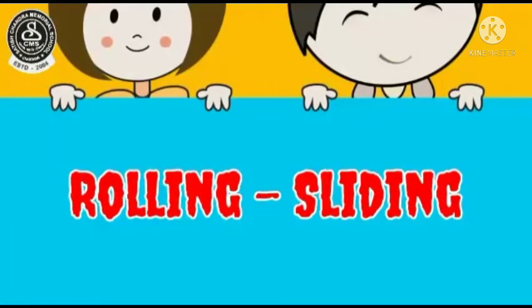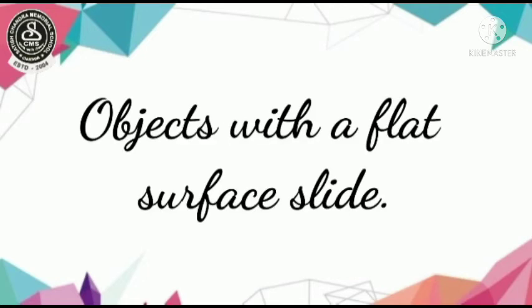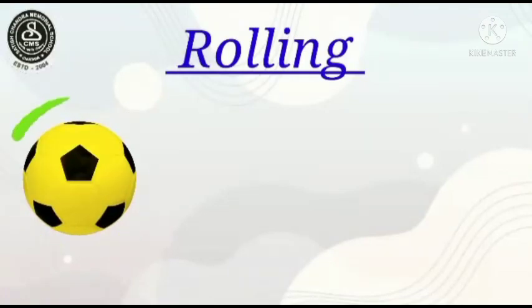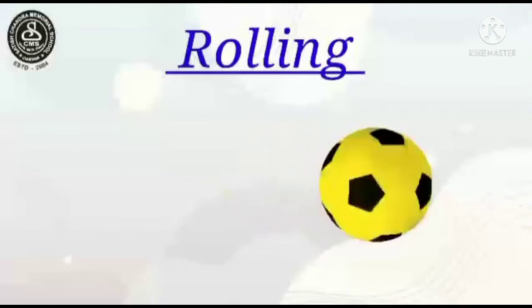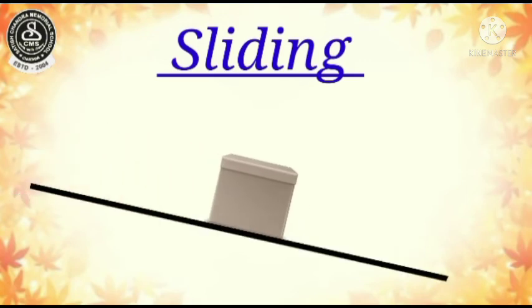Next, Rolling and Sliding. Objects with a round surface roll. Objects with a flat surface slide. Ball — ball has a round surface, so ball will roll. Box — box will slide.